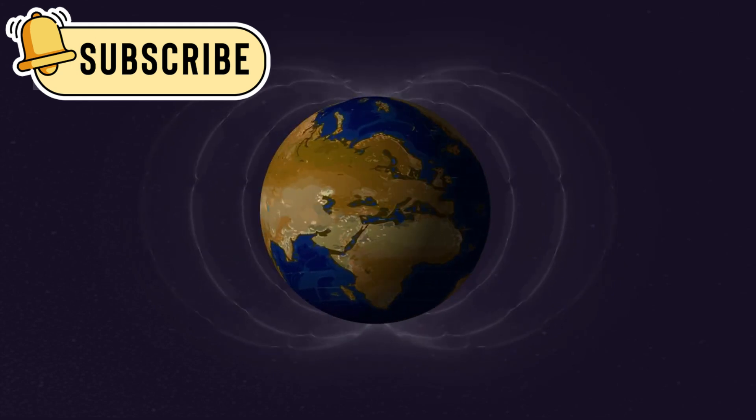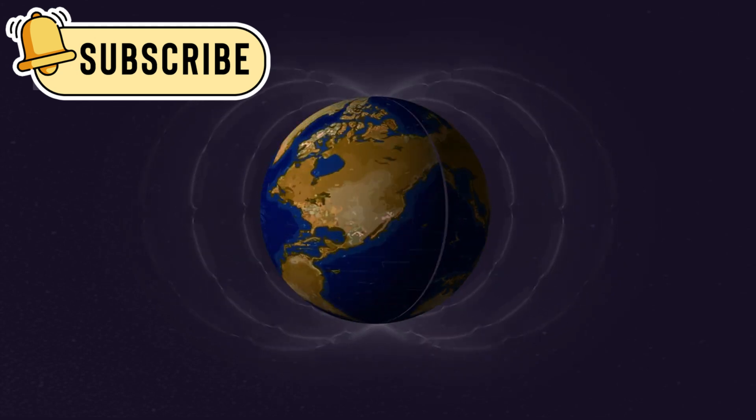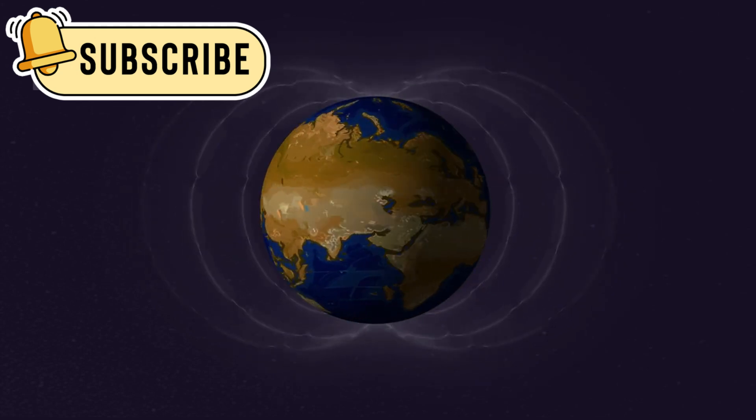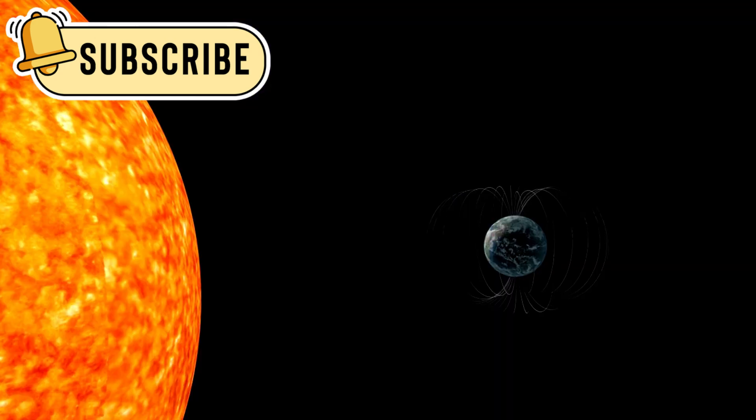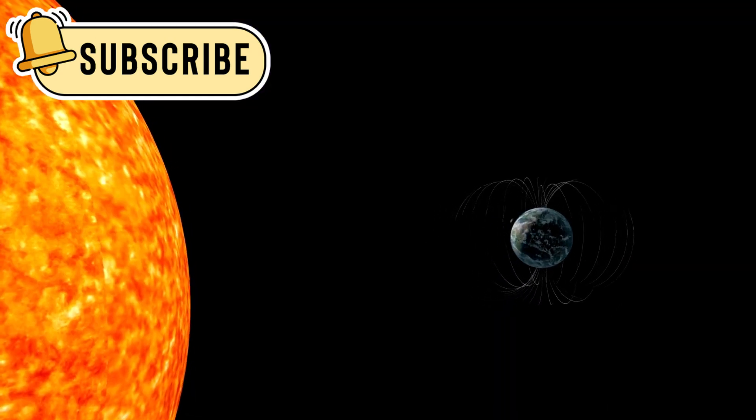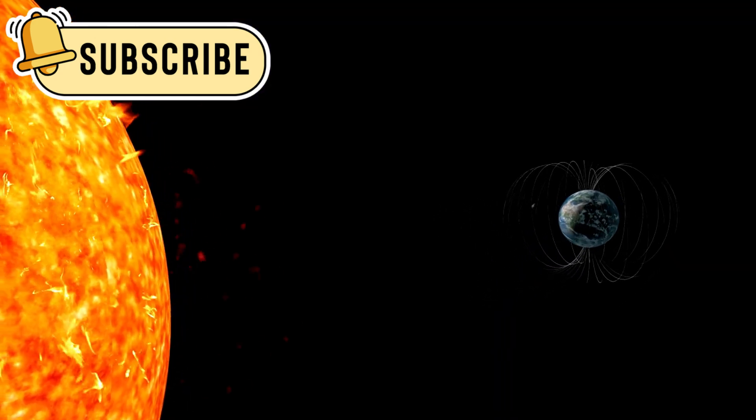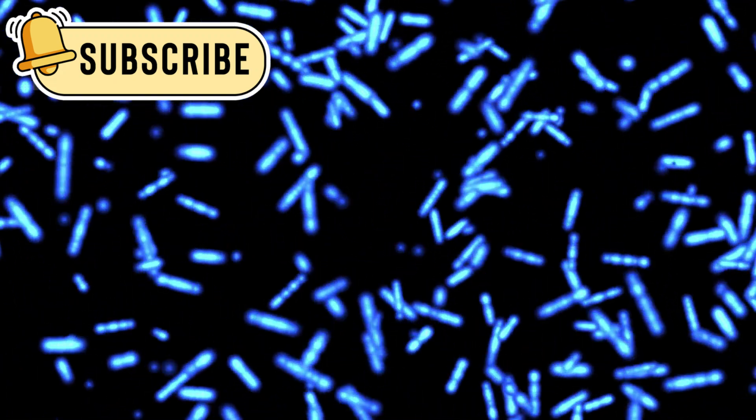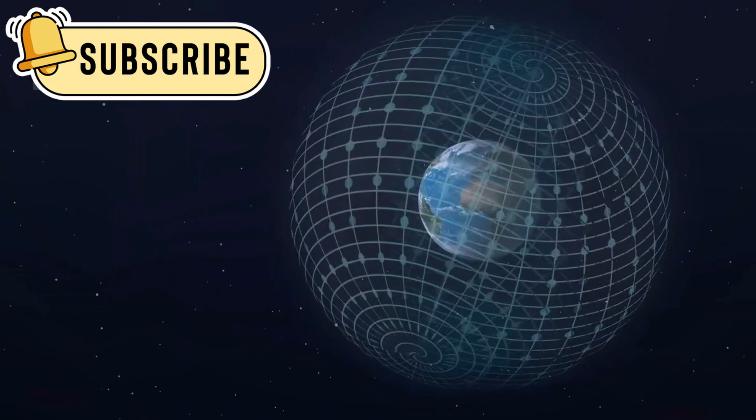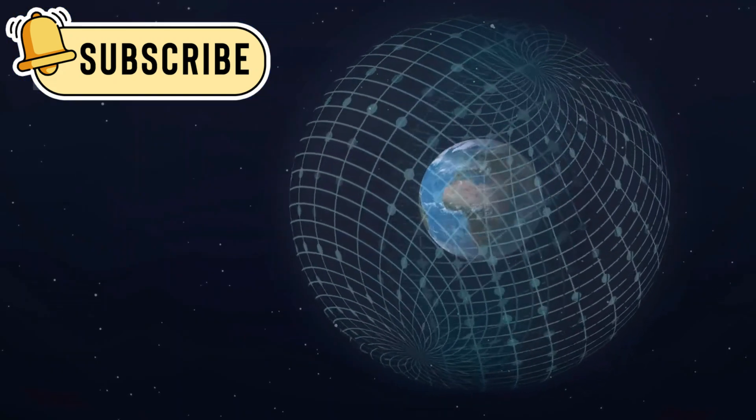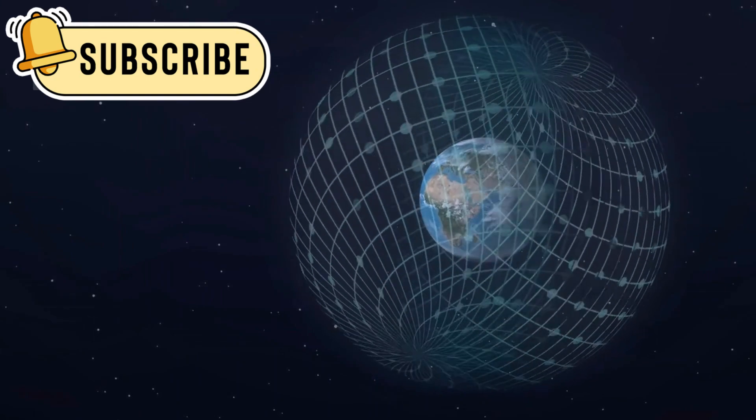Here's where things get even stranger. Some data hints that Pluto may possess a weak magnetic field, similar in behavior to Earth's but generated differently. If confirmed, this field could protect its hidden ocean from deadly solar radiation, creating a safe cradle for any microbial life below. It's a stunning idea that a tiny world so far away could build its own shield against the cosmos.